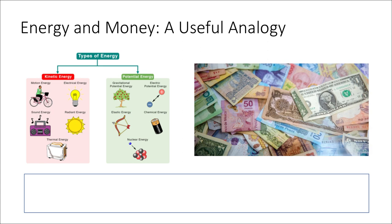Energy and money, if you think about it, aren't all that different. Just like money, energy comes in many different forms. So we have kinetic energy, we have potential energy, but even within those two categories we have specific types of kinetic energy and specific types of potential energy.